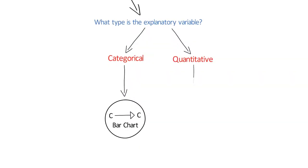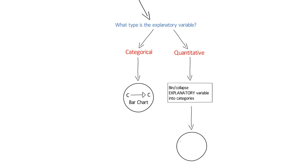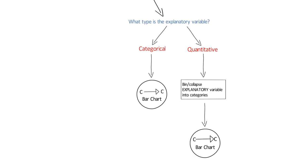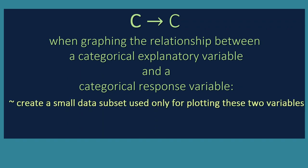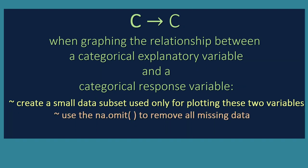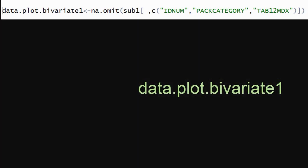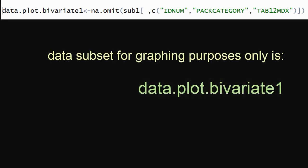Back to our graphing decisions flowchart. Now that we've collapsed our explanatory quantitative variable into categories, we're ready to make our categorical-to-categorical, or C to C, bar chart. When graphing the relationship between a categorical explanatory variable and a categorical response variable, we will first create a small subset of our data that we'll use only for plotting these two variables. We create a small subset containing only the unique identifier and the two variables we'll plot, then use the function na.omit to remove all rows with missing data.